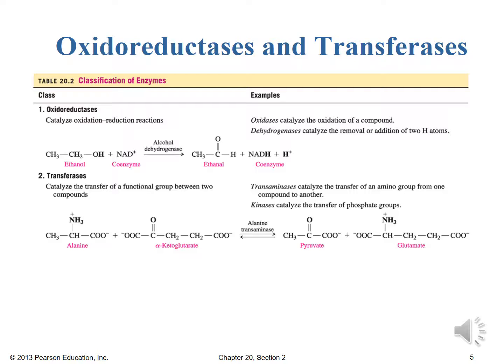So there we see we've done a transamination and we've taken the alanine amino group and we've added it to the alpha-ketoglutarate to form glutamate. So there you have it an example of a specific type of transferase.